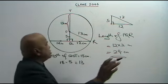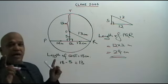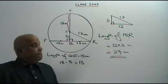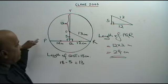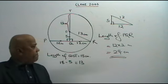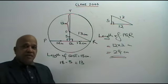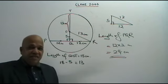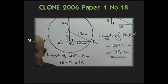That is your answer — the length of PQR is 24 centimeters. As simple as that.